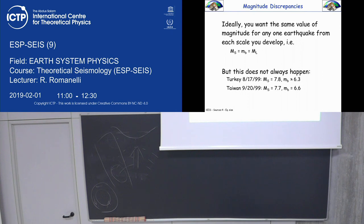Up to this point, it would be nice if all possible definitions of magnitude — including duration magnitude — coincided, each giving a number that tells you the strength of the earthquake. But they don't coincide in many cases. In one case it's trivially natural: in the 1970s, nuclear tests were being conducted.